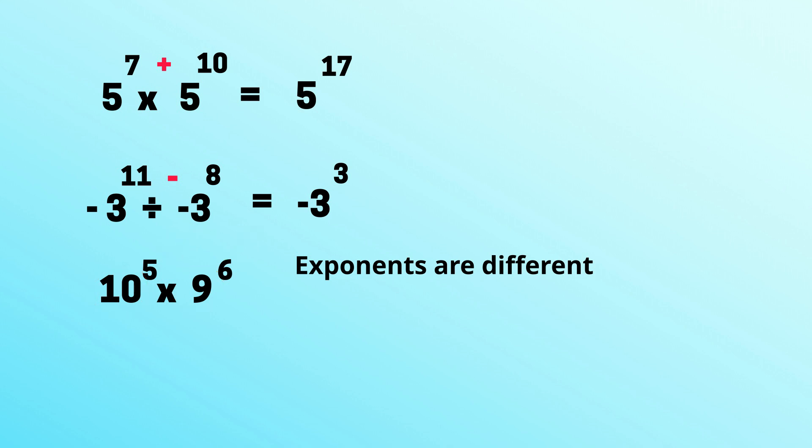And finally we have this example. You have 7 to the negative 3rd divided by 7 to the negative 9th. Bases are the same, so you will keep the base. Negative 3 minus a negative 9 becomes a positive 9. So 9 minus 3 equals 6, so you will have 7 to the 6th power. I hope that was helpful.